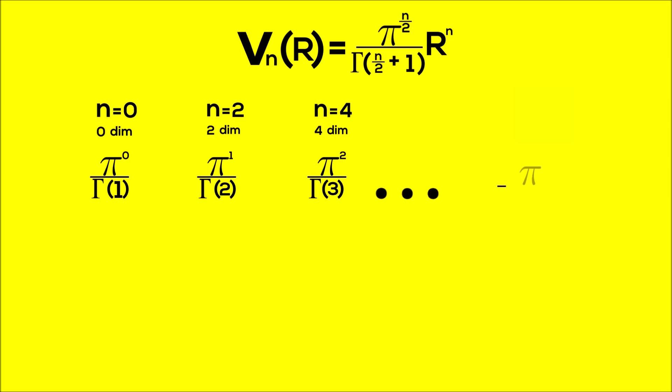So we can write the general term as pi to the k over gamma of k plus 1. Now, notice that only integers are showing up within the gamma function. And as we saw, gamma of an integer is that value minus 1 factorial. So for zero dimensions, the denominator is really just 0 factorial. And for two dimensions, it's 1 factorial. For four dimensions, it's 2 factorial, and so on.